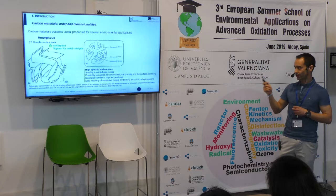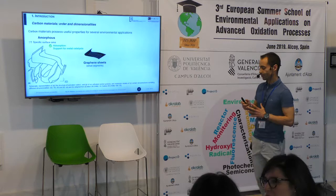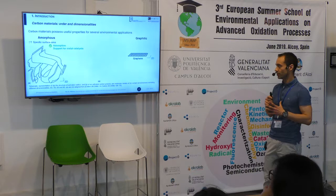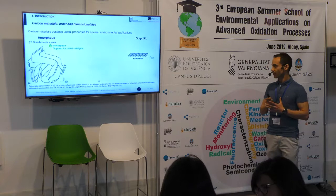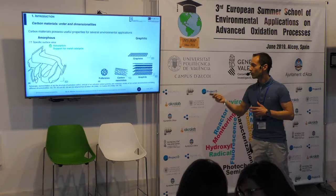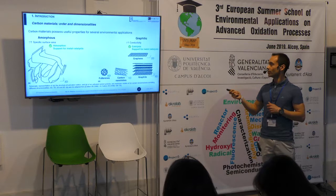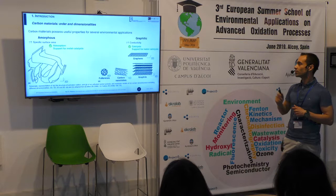Even in these very disordered materials, one can find small fragments of graphene sheets, which are the base building block for all the graphitic crystalline materials, such as graphite, carbon nanotubes, or fullerenes. These graphitic materials possess very high conductivity, which renders them very good for catalysis or also as support for metal catalysts.